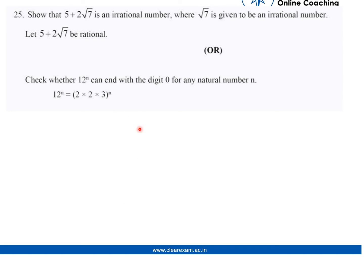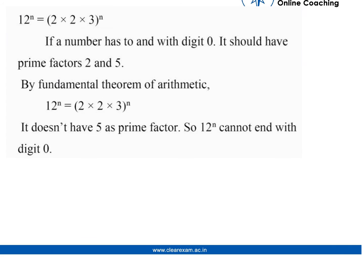For any number to end with 0, it should have 5 and 2 as its prime factors. But when we factorize 12, we don't get 5, and therefore it can never end with 0.